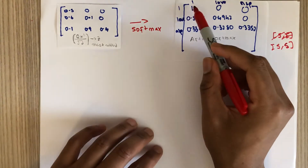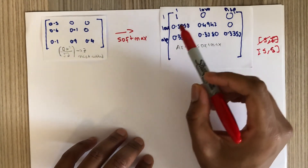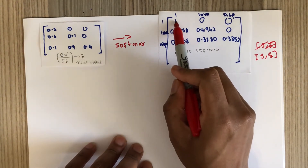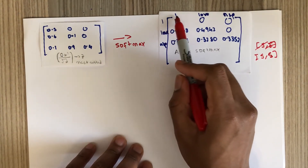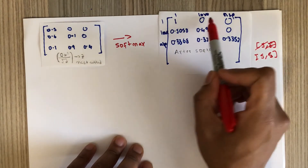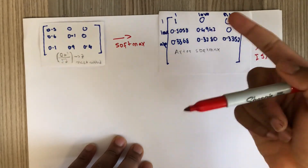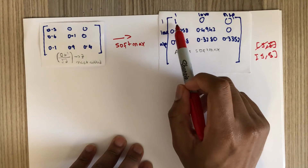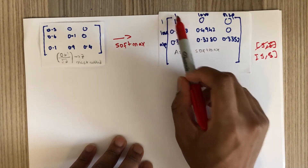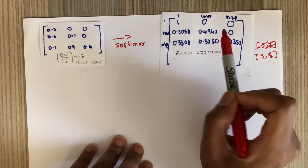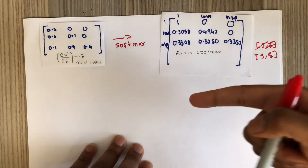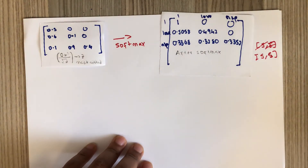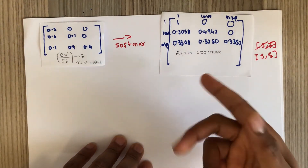'I' can only attend to itself. 'Love' can pay this much attention to 'I' and this much to itself, but zero to 'NLP' because it cannot attend future words. This is why we added the masking — to enforce causality.